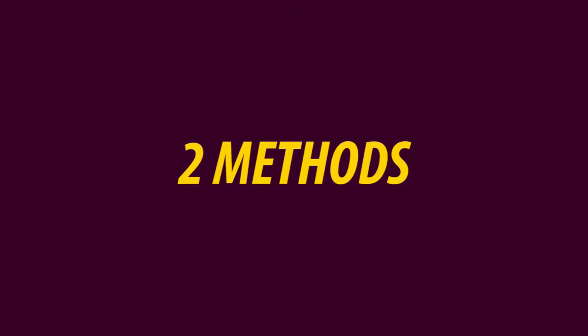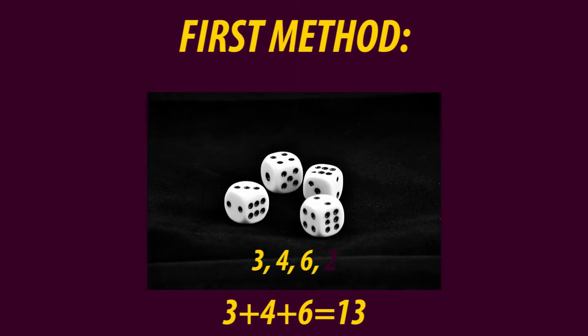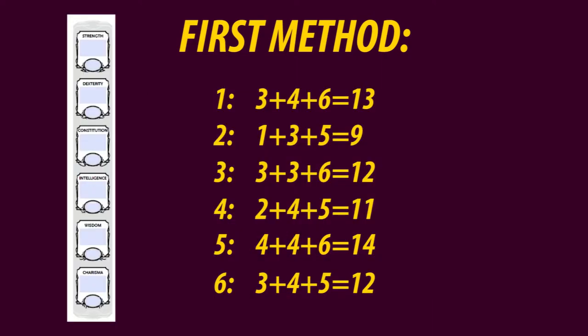I will introduce you to two methods of generating your scores. The first one is the traditional method using dice. Four d6 dice are rolled; the lowest number is discarded while the three highest ones are added up into a total sum. This is repeated until you have six numbers. The numbers are then distributed to the abilities according to your liking and what you have in mind for your character.